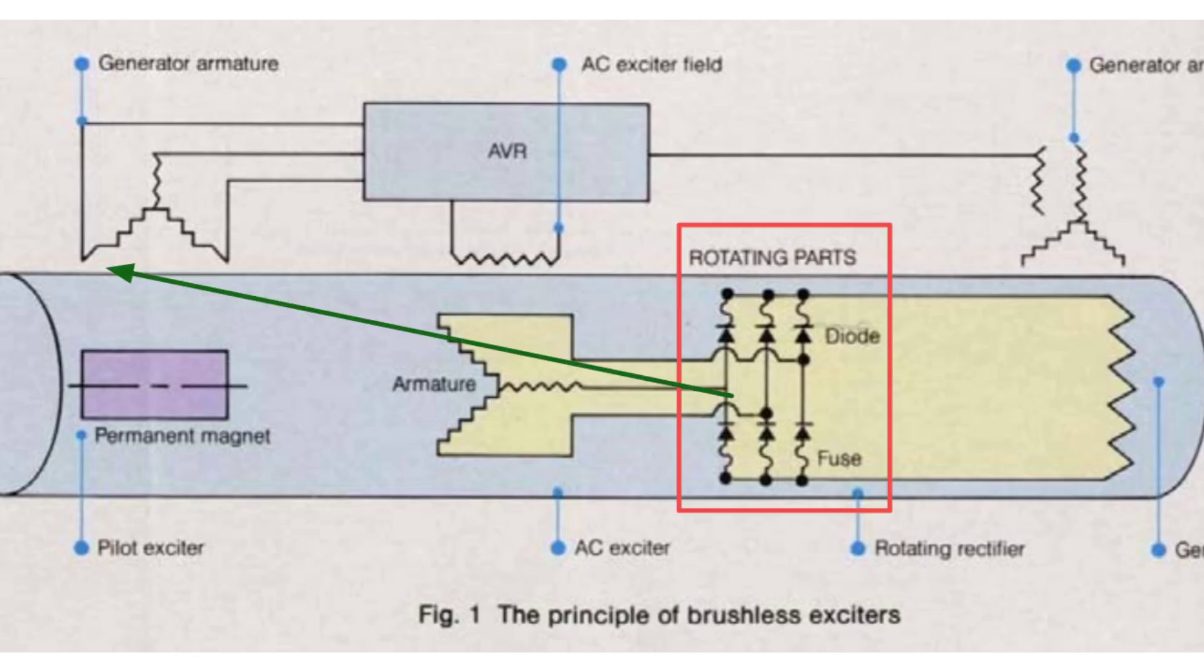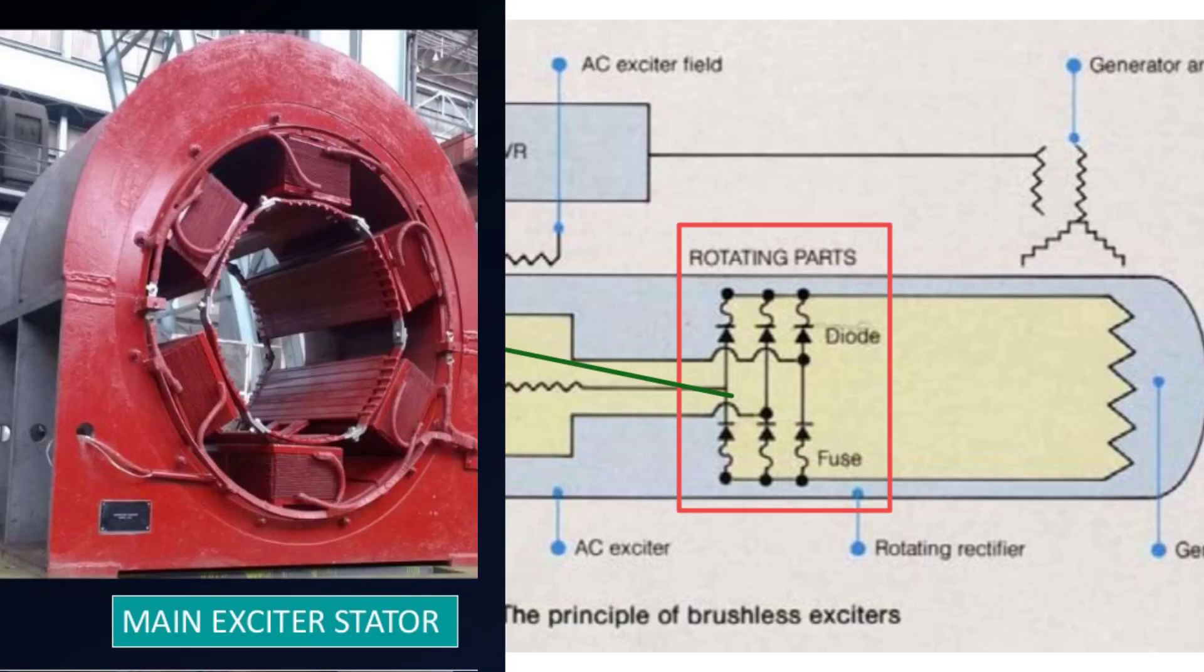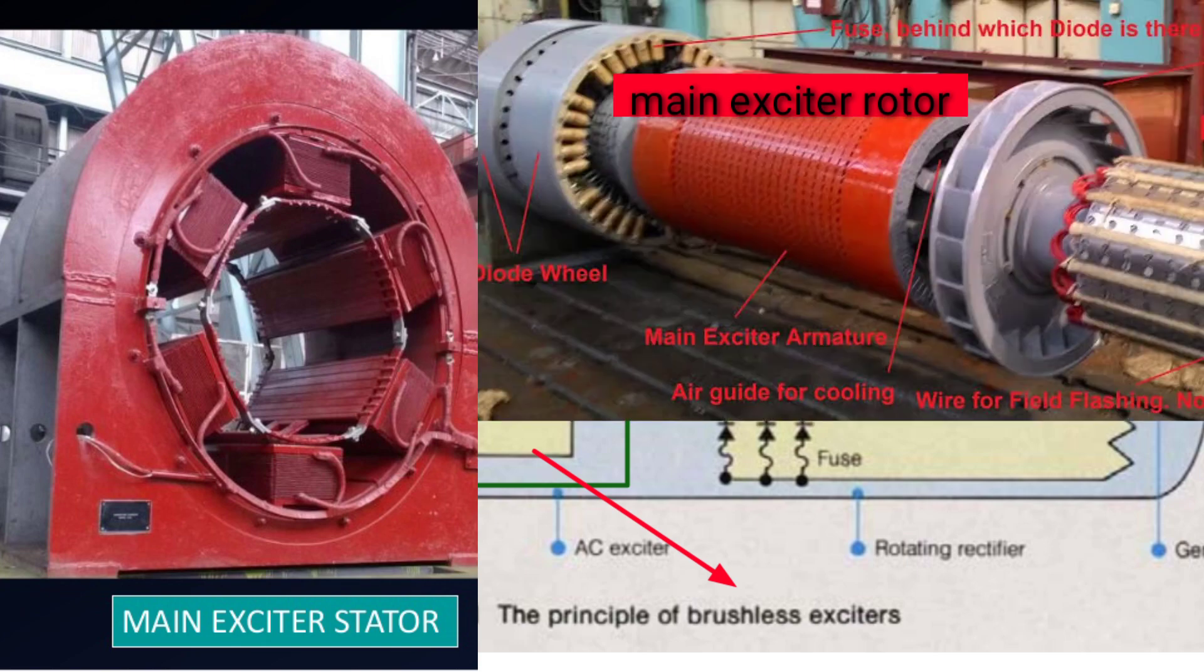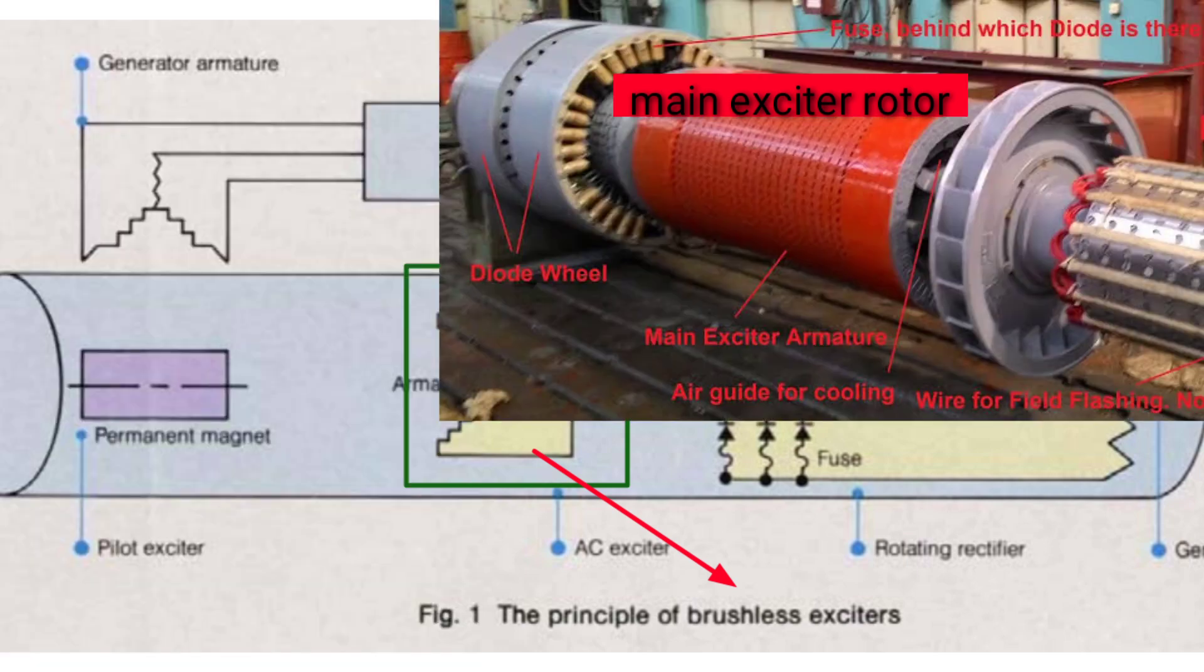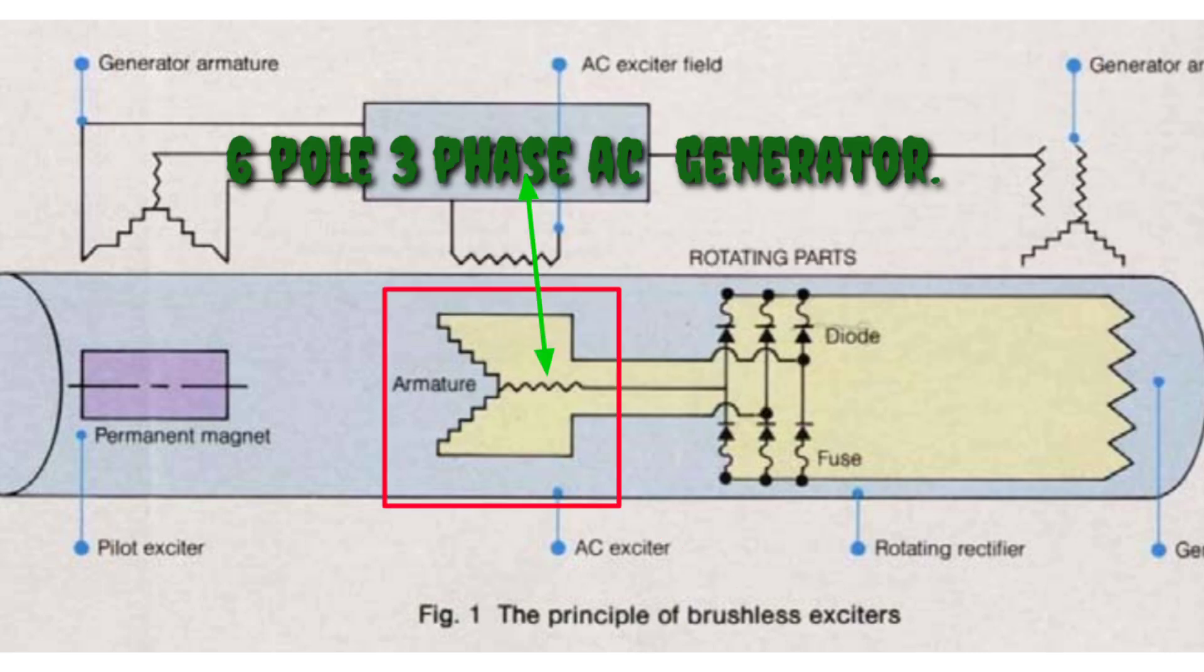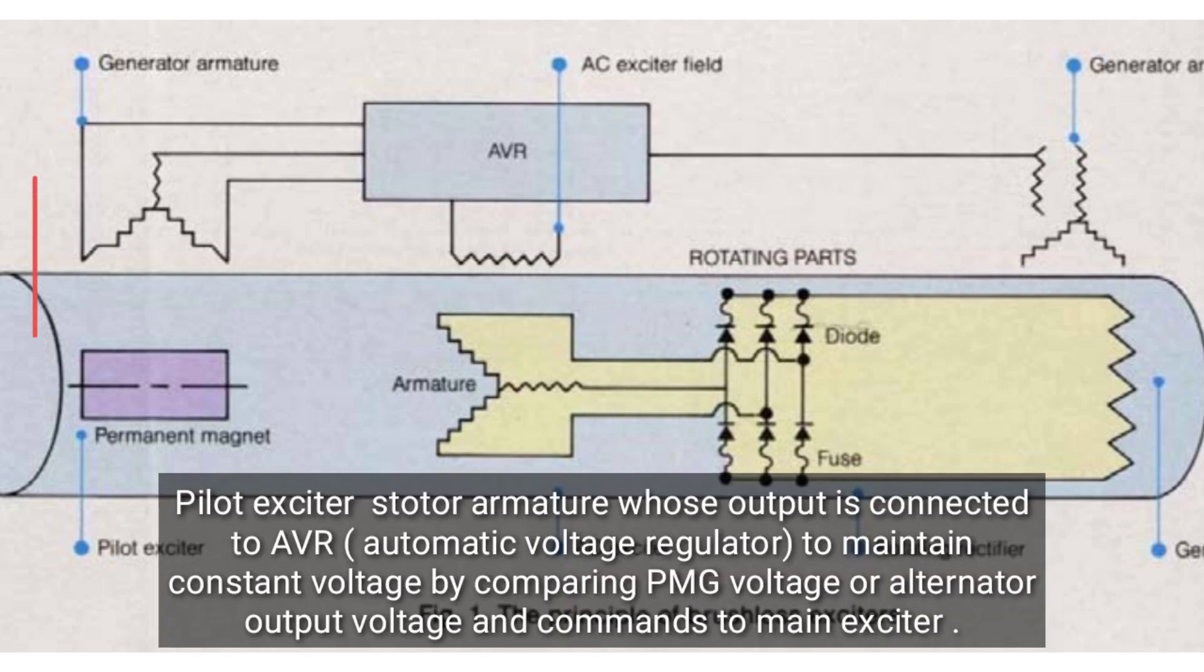This is the armature of the main exciter in which the armature cuts the magnetic field, so it is just a 6-pole three-phase AC generator. This is the permanent magnet rotor of the pilot exciter. This is the pilot exciter stator armature.